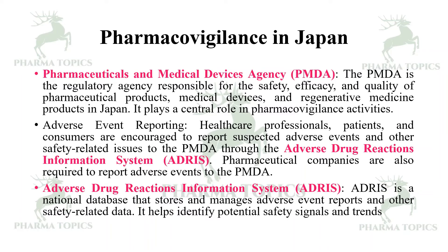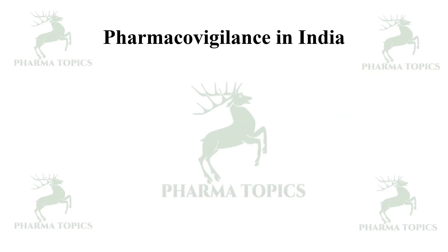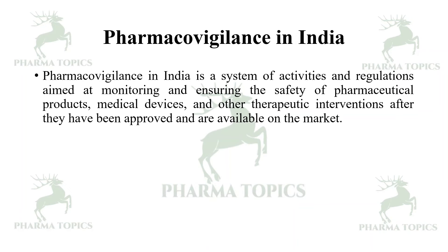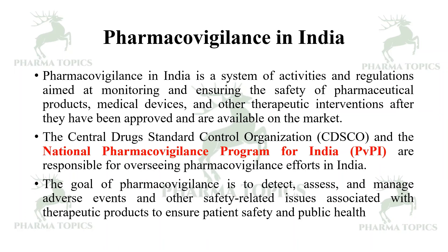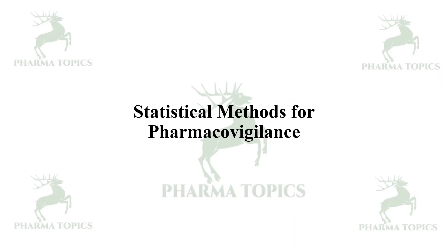In India, the pharmacovigilance program is the Pharmacovigilance Programme of India (PvPI), which is part of the Indian Pharmacopoeia Commission (IPC). The goal of pharmacovigilance in India is to detect, assess, and manage adverse events and other safety-related issues associated with therapeutic products, and to ensure patient safety and public health.